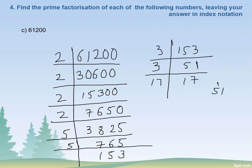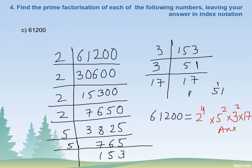17 times 1 is 17. Now writing it in index notation: 61200 is equal to 2 to the power 4, multiplied by 5 to the power 2, multiplied by 3 squared, multiplied by 17. This will be the answer.